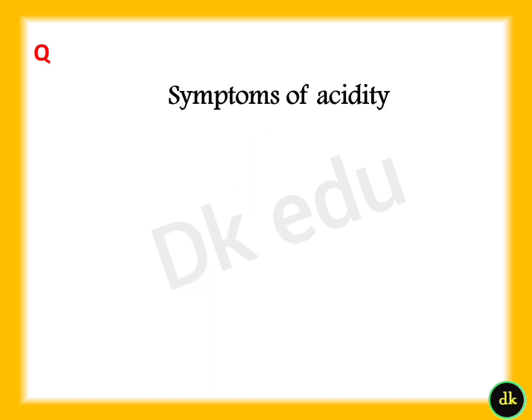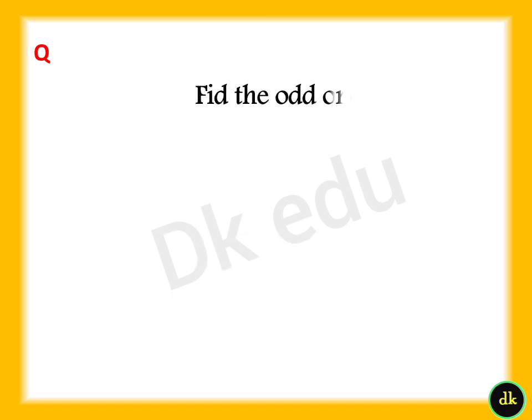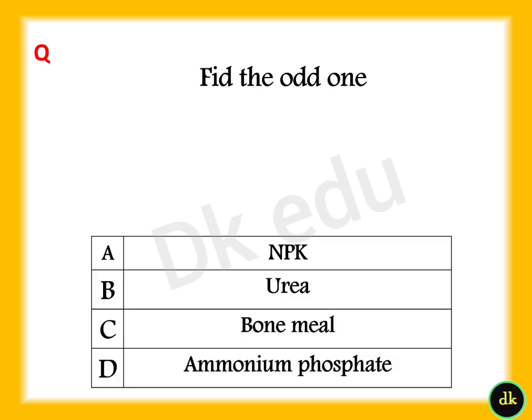Identify the image. Answer: Option B, Stripper. Symptoms of acidity — Answer: Option D, All of the above. Find the odd one. Answer: Option C, Bone Meal.